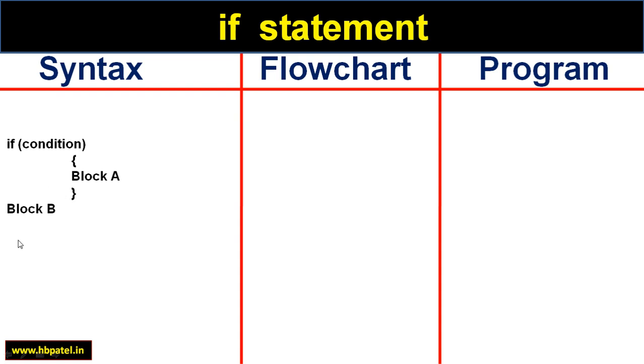Let us take some examples of condition that we specify with if statement. You can see there are some examples over here: age is greater than 18, marks less than 35, is income equal to expense, is my salary not equal to your salary. Indirectly a condition is a question which results into an answer of either true or false, or in other words yes or no.